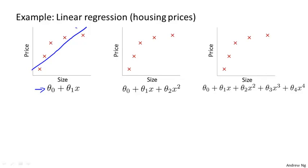But this isn't a very good model. Looking at the data, it seems pretty clear that as the size of the house increases, the housing prices plateau or kind of flatten out as we move to the right. And so this algorithm doesn't fit the training set very well, and we call this problem underfitting.